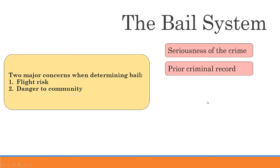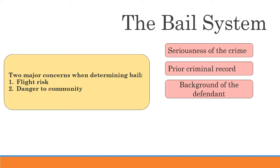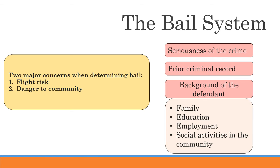They also look at your prior criminal record — have you ever been convicted of violent or other offenses, or have you ever failed to show up to court? Importantly, they're going to be looking at the background of the defendant — the social background. Does the defendant have a stake in the community? Things like: do they have a family, high levels of education, a job, do they engage in activities within the community? Individuals with all of these have a greater stake in the community and subsequently a lower flight risk.